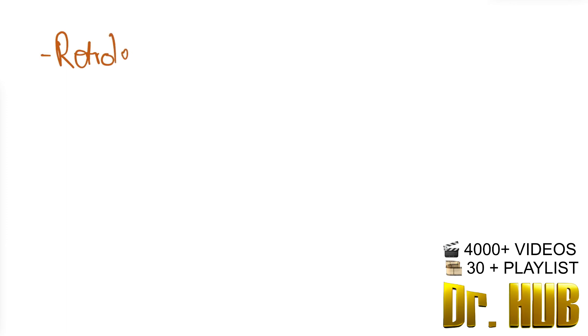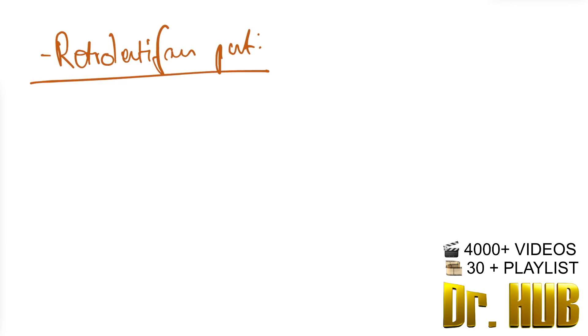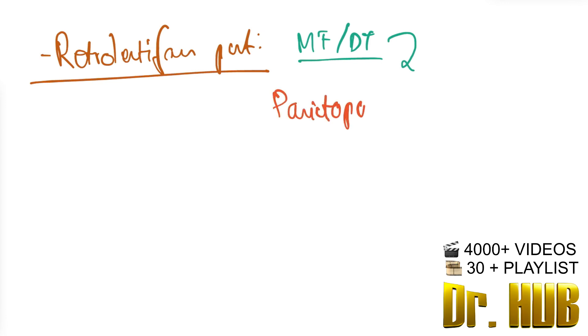Next is the retrolentiform part. Under the retrolentiform part, the motor fibers of the descending tracts include the paritopontine, occipitopontine, and occipitotectal.